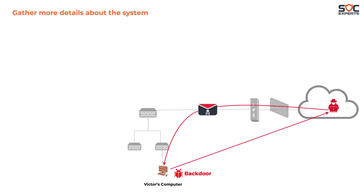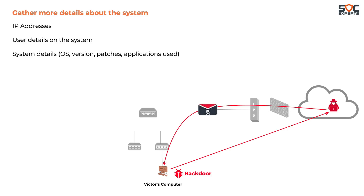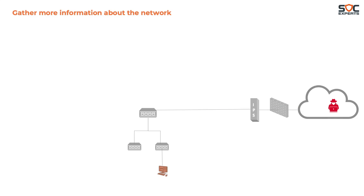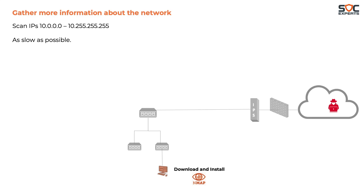The next phase is to gather more details about the system — IP address, user details, and system details. All these data points help the attacker develop more accurate attacks. The IP address of the machine is 10.10.25.7, meaning the company uses an internal 10.x network range. Using Victor's computer, the attacker downloads and installs a scanning tool like nmap and scans the entire 10.x range, writing a script that scans 100 IP addresses then sleeps for 5 minutes before scanning another 100, to avoid detection.